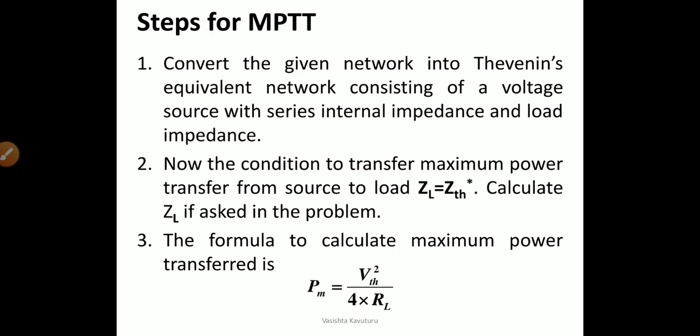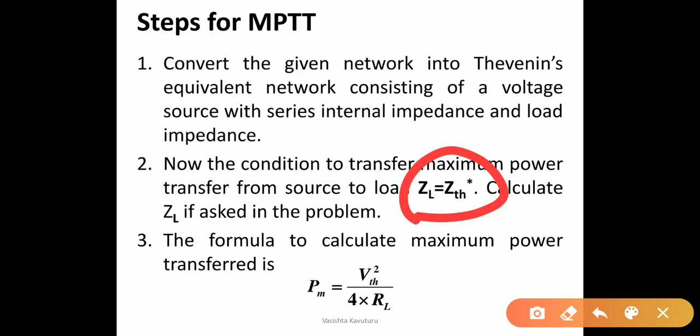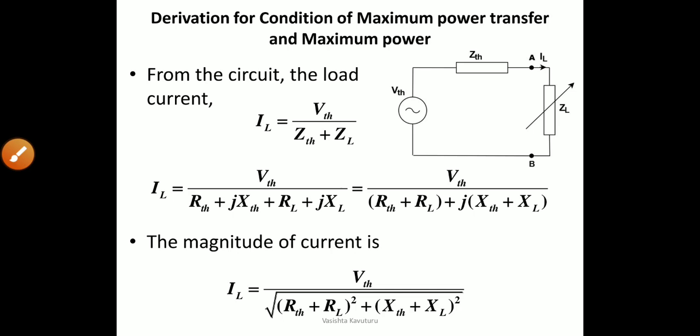The condition to transfer maximum power is: load impedance is equal to the complex conjugate of the source impedance. Calculate this ZL value if it is asked in the problem. In DC we have only load resistance, but in AC we calculate load impedance as the complex conjugate of the source impedance. The formula for maximum power transferred is: Pm = VTH² / (4 × RL), where we take load resistance only — not load impedance — because the resistive part is the only amount of actual power dissipated.